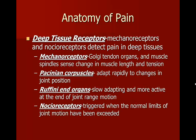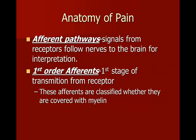Deep tissue receptors include mechanoreceptors and nociceptors that detect pain in deep tissues. Golgi tendon organs and muscle spindles sense changes in muscle length and tension, located in your tendons and muscles. Pacinian corpuscles adapt rapidly to changes in joint position and help with coordination. Ruffini end organs are slow-adapting and more active at the end of joint range of motion — these are fine-tuning organs, like when you smoothly set a cup of coffee on the edge of a table. Nociceptors are triggered when the normal limits of joint motion have been exceeded.